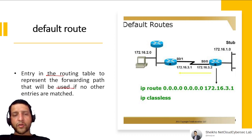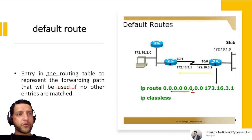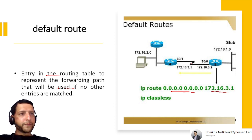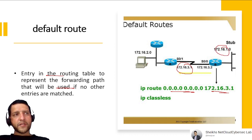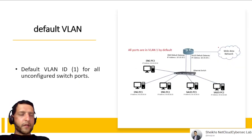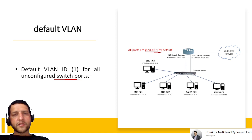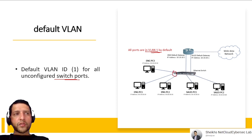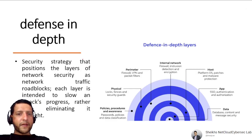Default Route is an entry in the routing table used as the forwarding path if no other entry matches — configured with 'ip route 0.0.0.0 0.0.0.0 [next-hop]'. Default VLAN: VLAN 1 is the default VLAN for all unconfigured switch ports. Unless ports are specifically assigned to a VLAN, they remain in VLAN 1. You can configure ports to move them to a specific VLAN.